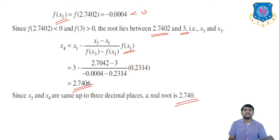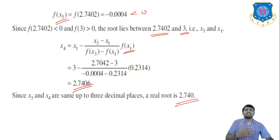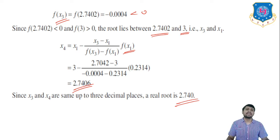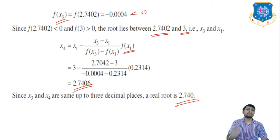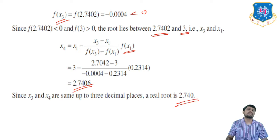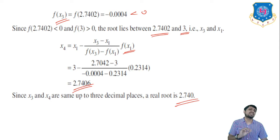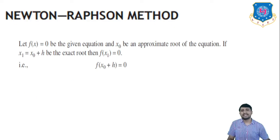In the Regula Falsi method, you can reach your answer within 3 to 4 iterations, compared to the bisection method where you need almost 8 to 10 approximations. So this is an updated version of bisection. Next is the Newton-Raphson method — the most important method.